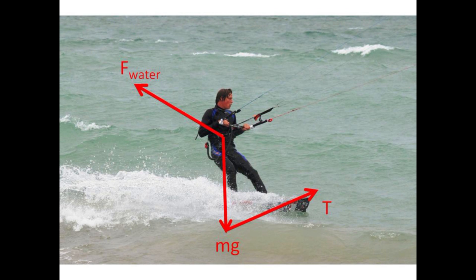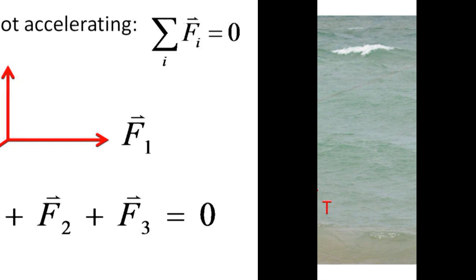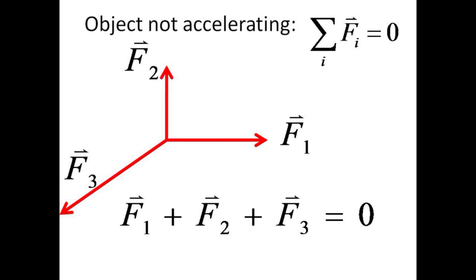Assuming that he's moving across the water at constant velocity, then the vector sum of these three forces should be zero, that is, they all cancel. This is a general condition for equilibrium, that the vector sum of the forces should be zero.